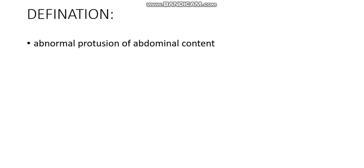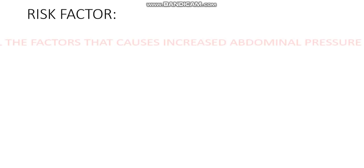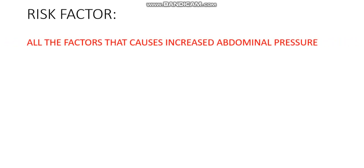Starting with the definition of hernia, it's an abnormal protrusion of abdominal content. There are certain risk factors behind this condition because it's abnormal — not all of us develop these things. The risk factors are all the factors that cause increased abdominal pressure.